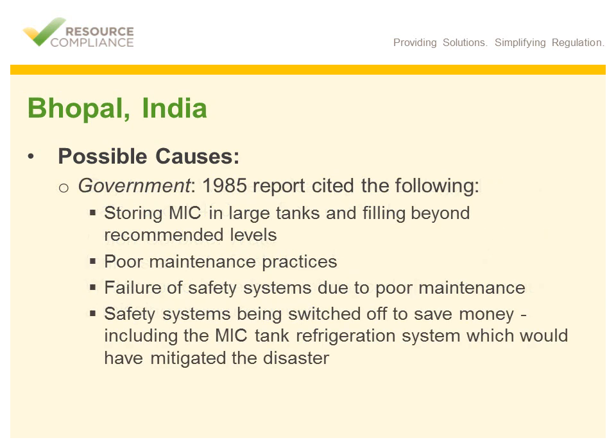A government report in 1985 cited that Union Carbide had been storing MIC in large tanks and filling them beyond recommended levels. The report also noted that poor maintenance practices had likely led to the failure of safety systems that could have prevented or at least mitigated the leak. To top it off, Union Carbide had shut off the MIC tank refrigeration system, which would have mitigated the disaster, in order to save money.